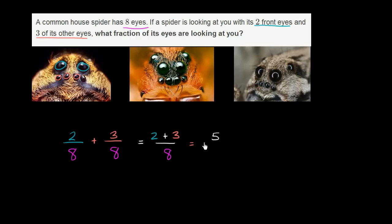Five out of the eight eyes are looking at us, and we see it right over here: one, two, three, four, five. Five of the total of eight eyes are looking at us in a fairly creepy way.